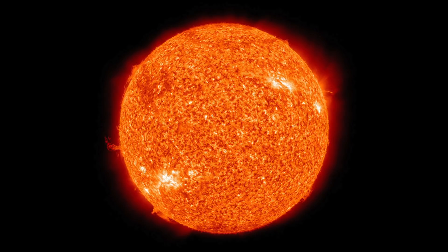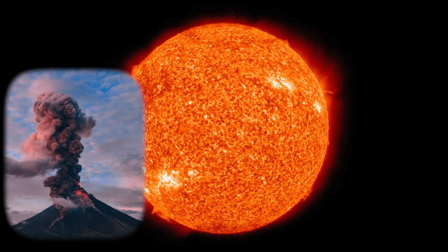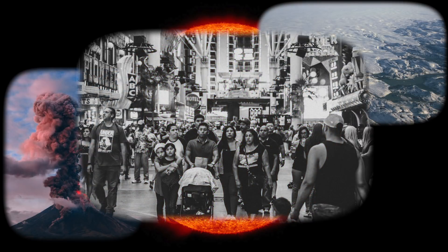So the sun is the main driver of Earth's climate. But volcanoes, large ice sheets, and humans all influence the climate too.